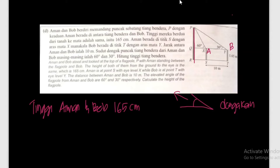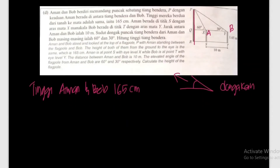Sudut dongak puncak tiang bendera dari Aiman dan Bob masing-masing ialah 60° dan 30°. Hitung tinggi tiang bendera tersebut. Kalau macam ni kita guna Teorem Pythagoras. Kita dah ada 10 meter. Kalau cikgu lukis balik gambar dia - tiang bendera, Aiman sudut 60°, sudut 90°.